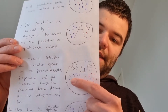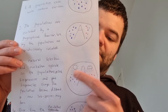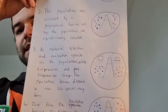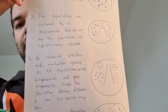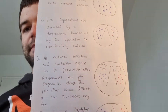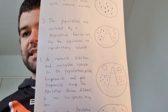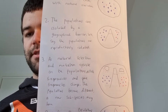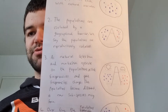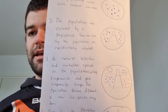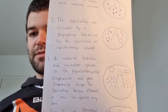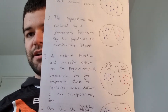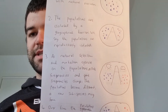I've drawn a sun on one side and rain clouds on the other side. What that represents is that when the populations are isolated, they'll be exposed to different conditions. Therefore, natural selection will operate on them differently, and new traits will be selected for. Also, mutations will happen differently, so they'll get different mutations as well.